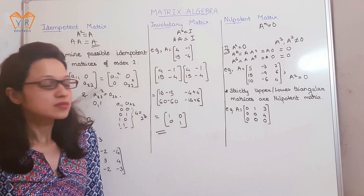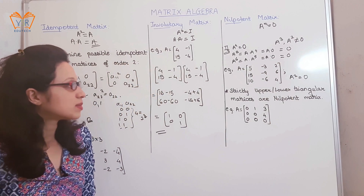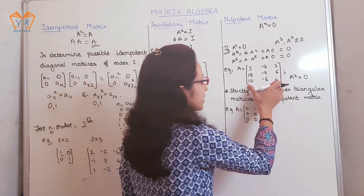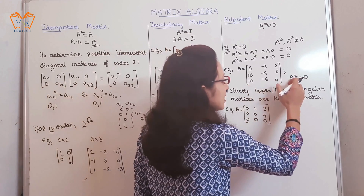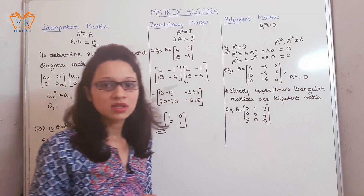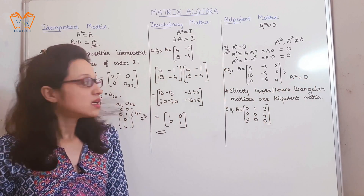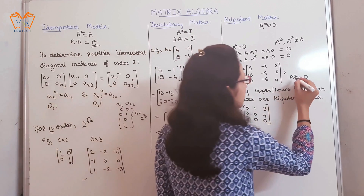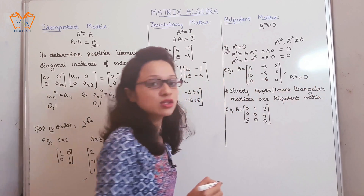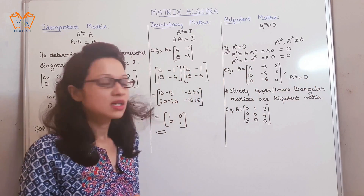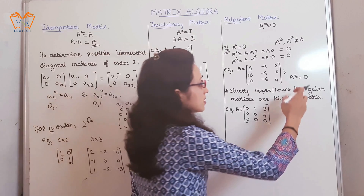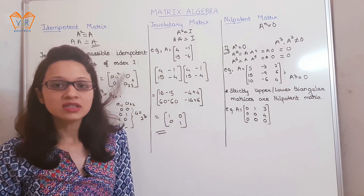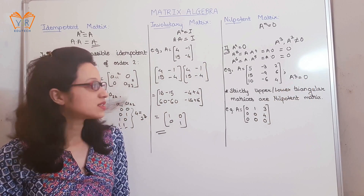Consider one more example: if A equals a given matrix and A squared equals the zero matrix, then the smallest positive integer m is 2. This makes A a nilpotent matrix — A raised to 2 results in the null matrix.